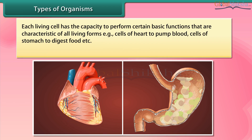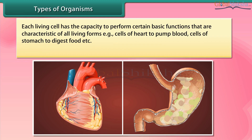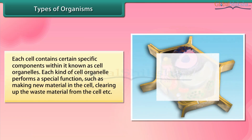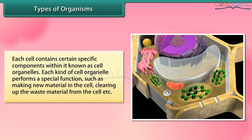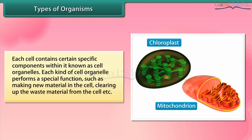Each living cell has the capacity to perform certain basic functions that are characteristic of all living forms — for example, cells of the heart to pump blood and cells of the stomach to digest food. Each cell contains certain specific components within it known as cell organelles. Each kind of cell organelle performs a special function, such as making new material in the cell or clearing up the waste material from the cell.